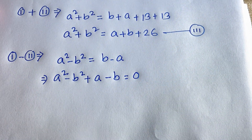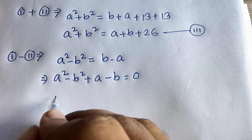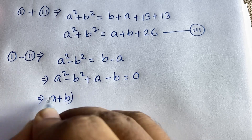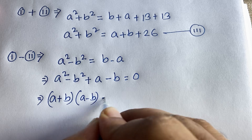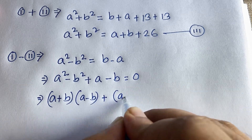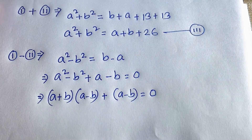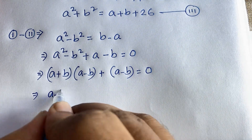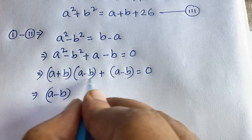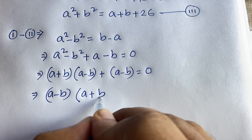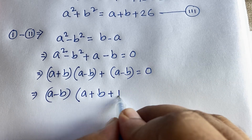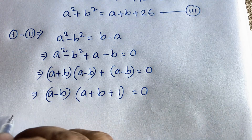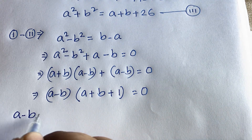We know the identity: a squared minus b squared equals (a plus b)(a minus b). So we have (a plus b)(a minus b) plus (a minus b) equals 0. Here (a minus b) is a common factor, so we factor it out to get (a minus b)(a plus b plus 1) equals 0.